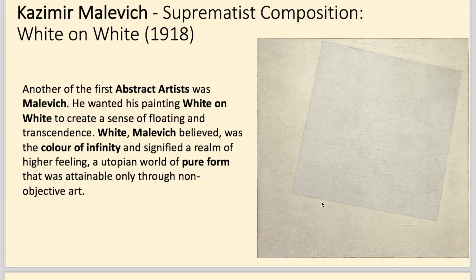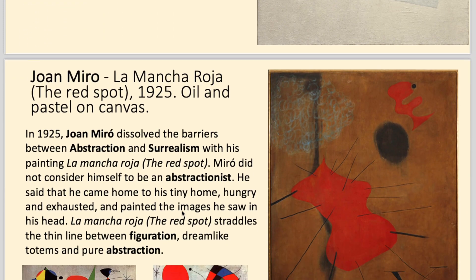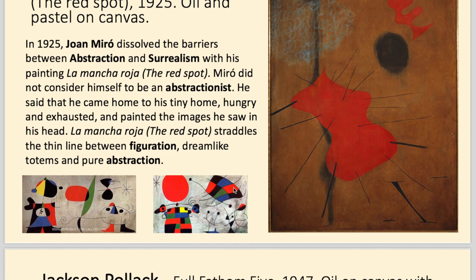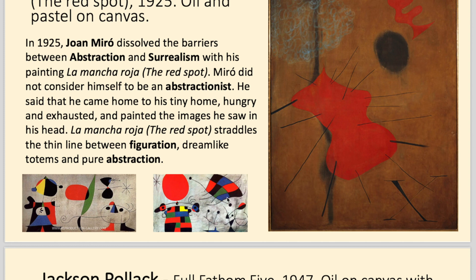Malevich continued along that vein — he was also trying to get to a spiritual place with his paintings. His picture was believed to signify a realm of higher feeling, a utopian world of pure form attainable only through non-objective art. And Miro painted very colourful, interesting little objects and shapes — almost figurative, some of them. He didn't consider himself an abstract artist; he used to hallucinate little images, apparently from extreme hunger, and he painted all the images he used to see and hallucinate.